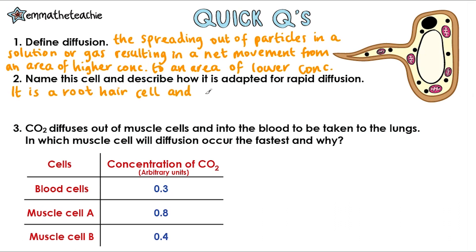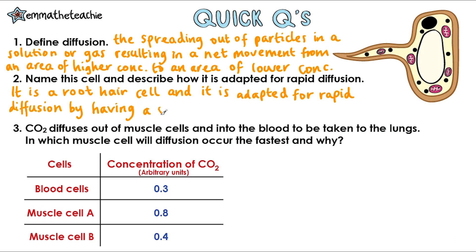This is a root hair cell and it is adapted for rapid diffusion by having a shape that increases its surface area — i.e. it's got this little sticky-out bit. Question three: CO₂ diffuses out of muscle cells and into the blood to be taken to the lungs. In which muscle cell will diffusion occur the fastest and why?